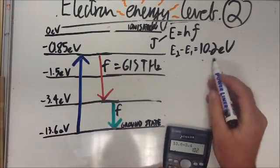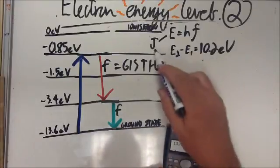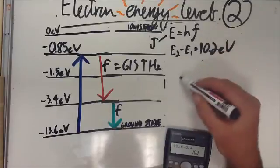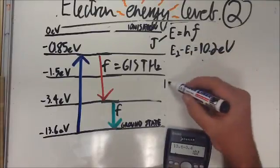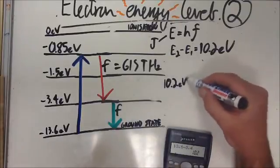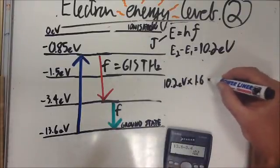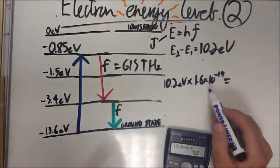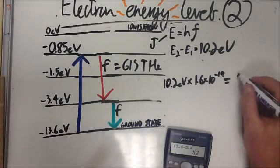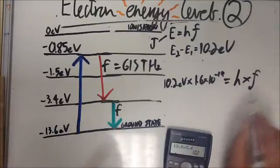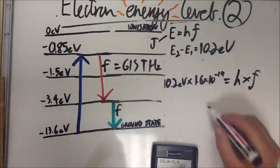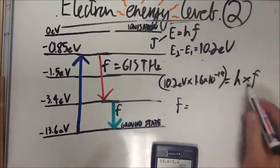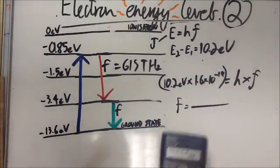We can't use this because it's not in joules. So using E equals HF, we need to figure out some joules. So we times 10.2 electron volts by the charge on an electron, which is 1.6 times 10 to the minus 19. What comes next? That equals Planck's constant times F. Now we know Planck's constant, so F is equal to this number divided by Planck's constant.